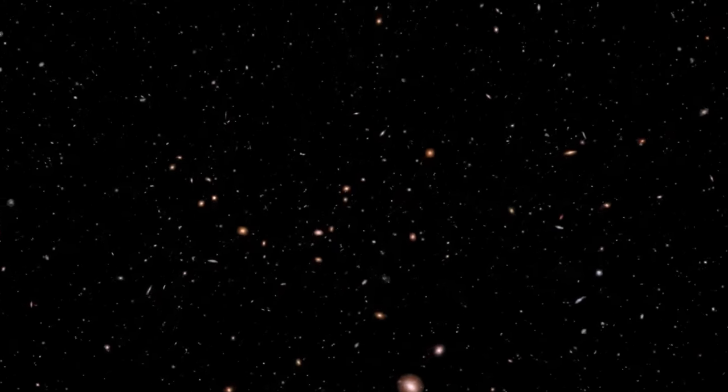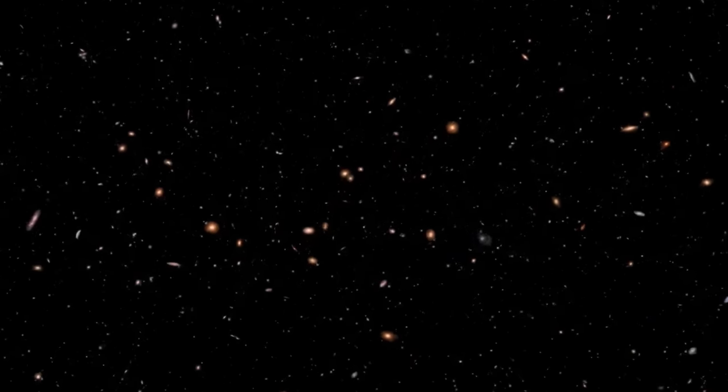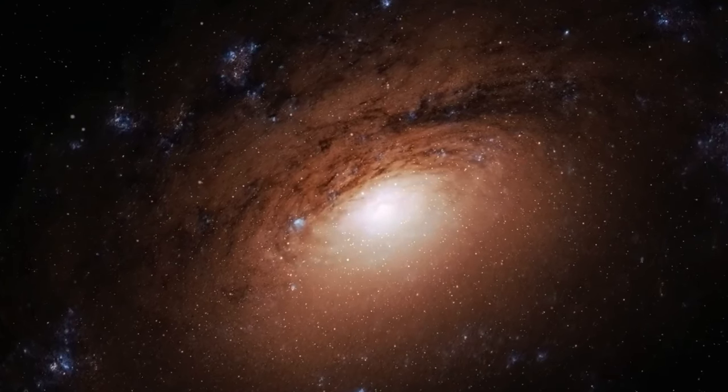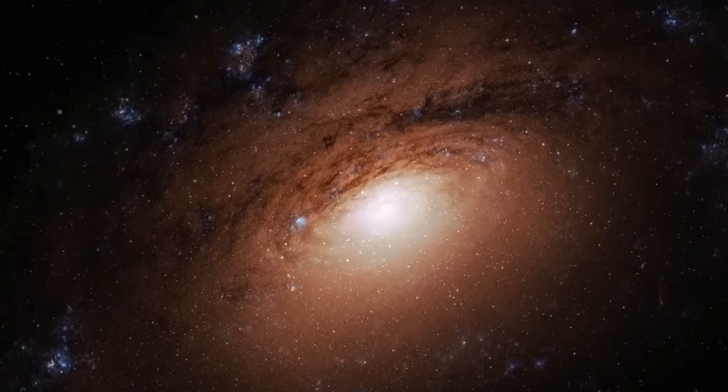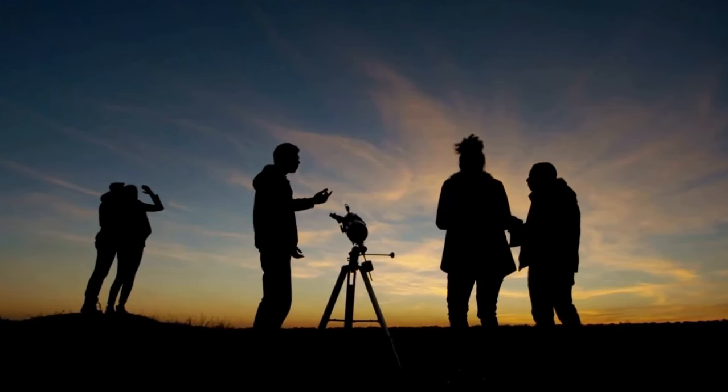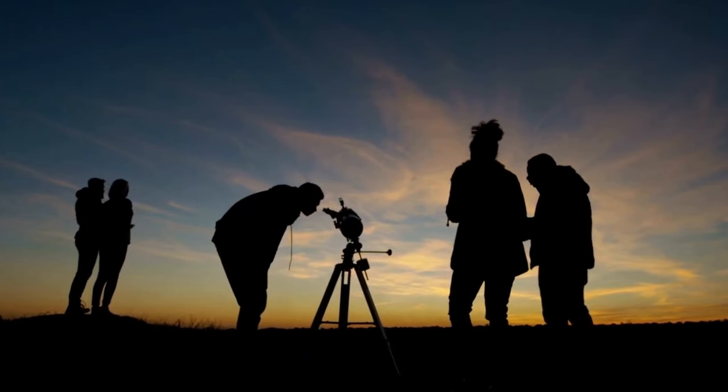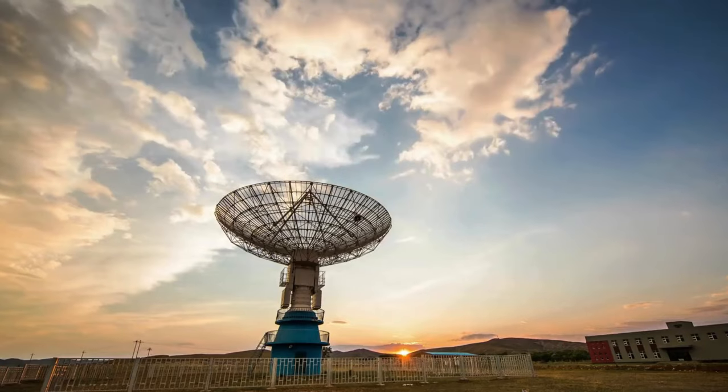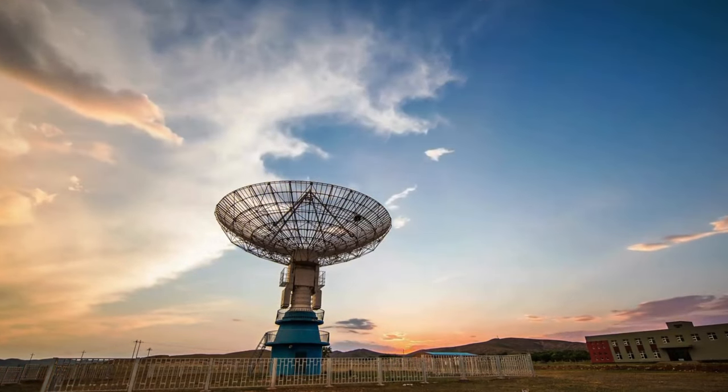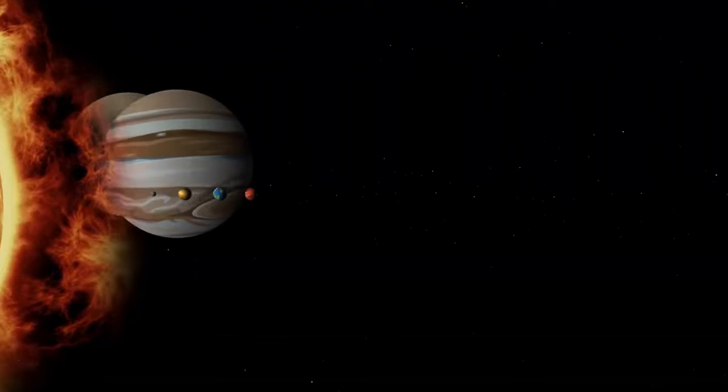Furthermore, theorists expected that as the JWST delved deeper into space and farther back in time, there would be fewer galaxies and eventually a dark age. However, the images reveal galaxies as large as the Milky Way even just a few hundred million years after the theorized Big Bang. Additionally, the number of galaxies observed at redshifts above 10 is at least 100,000 times greater than predicted by theorists. The formation of so many substantial galaxies in such a condensed time frame challenges the Big Bang theory.